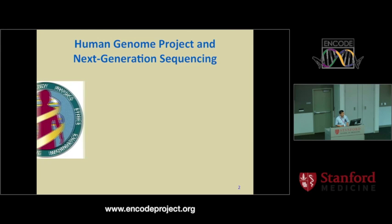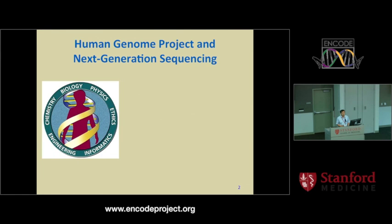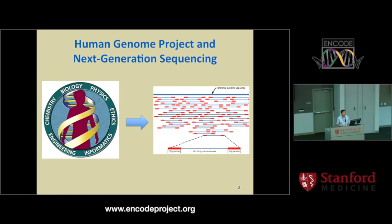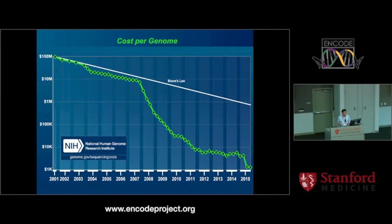In early 2000 we had the first human genome draft completed by the public and private sequencing consortia. At the time the effort involved in sequencing was not realistic for processing large numbers of individual samples. But from this figure pulled from the NHGRI website we can see that sequencing cost has been tremendously decreased, making it now more realistic to perform multiple sequencing runs at lower cost in a very short time period.